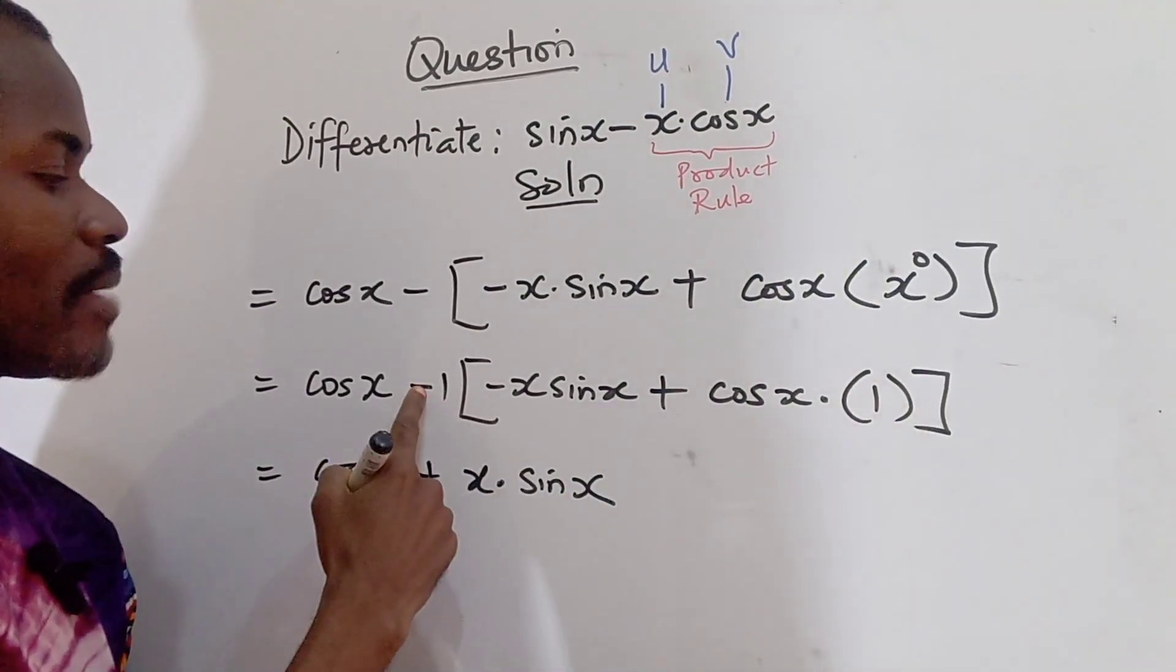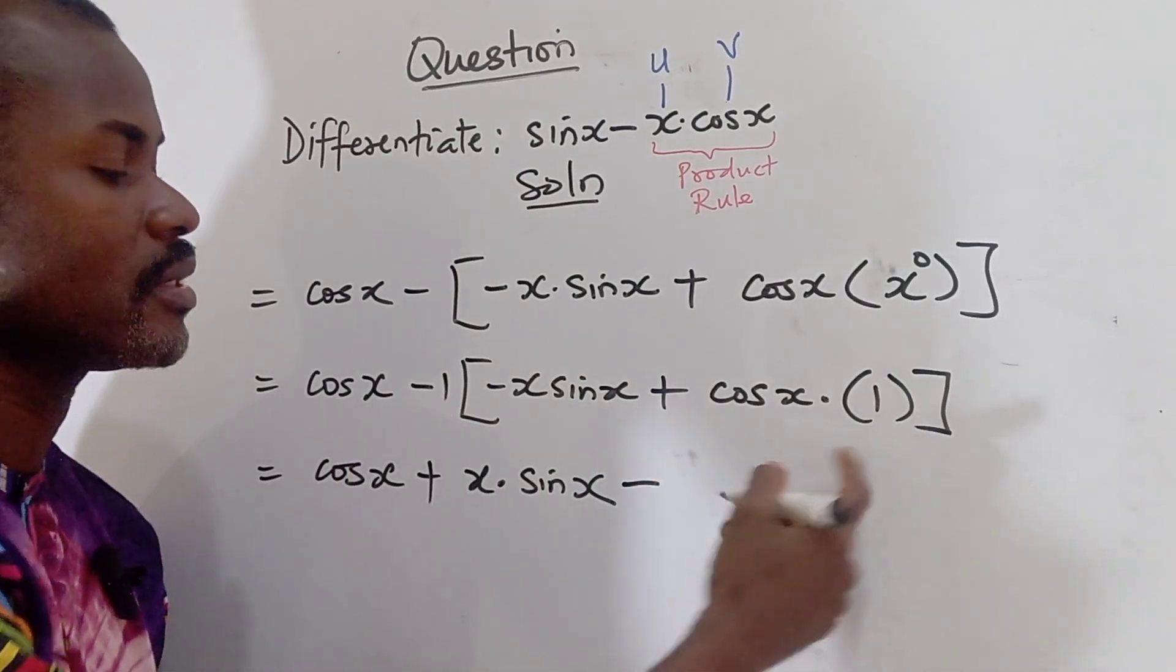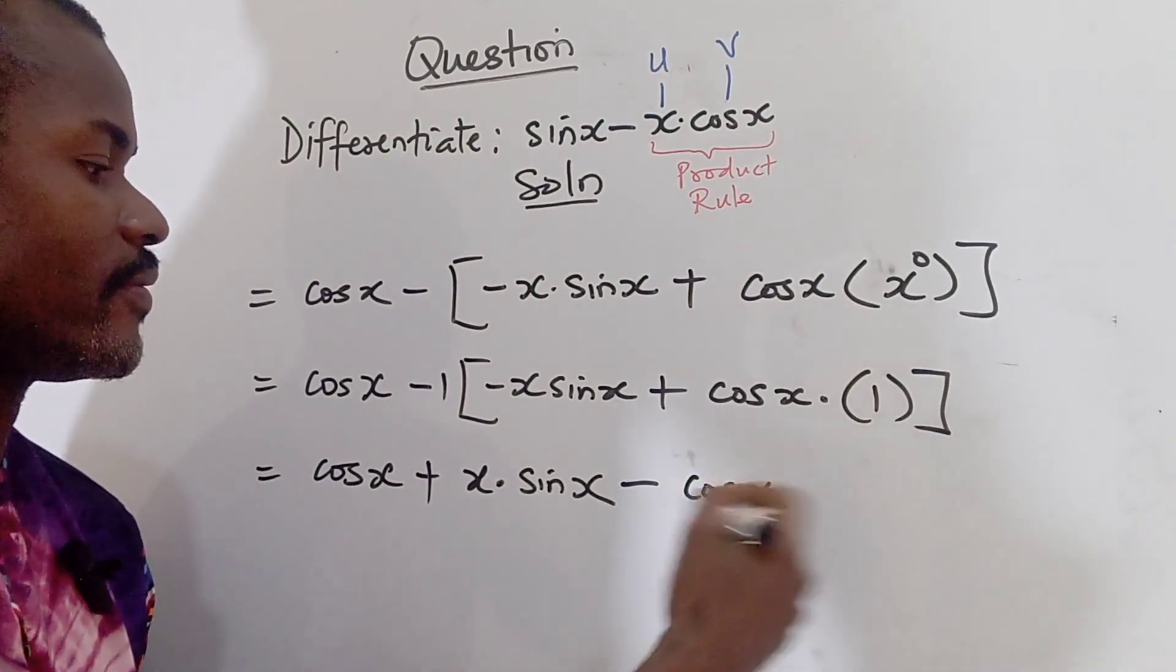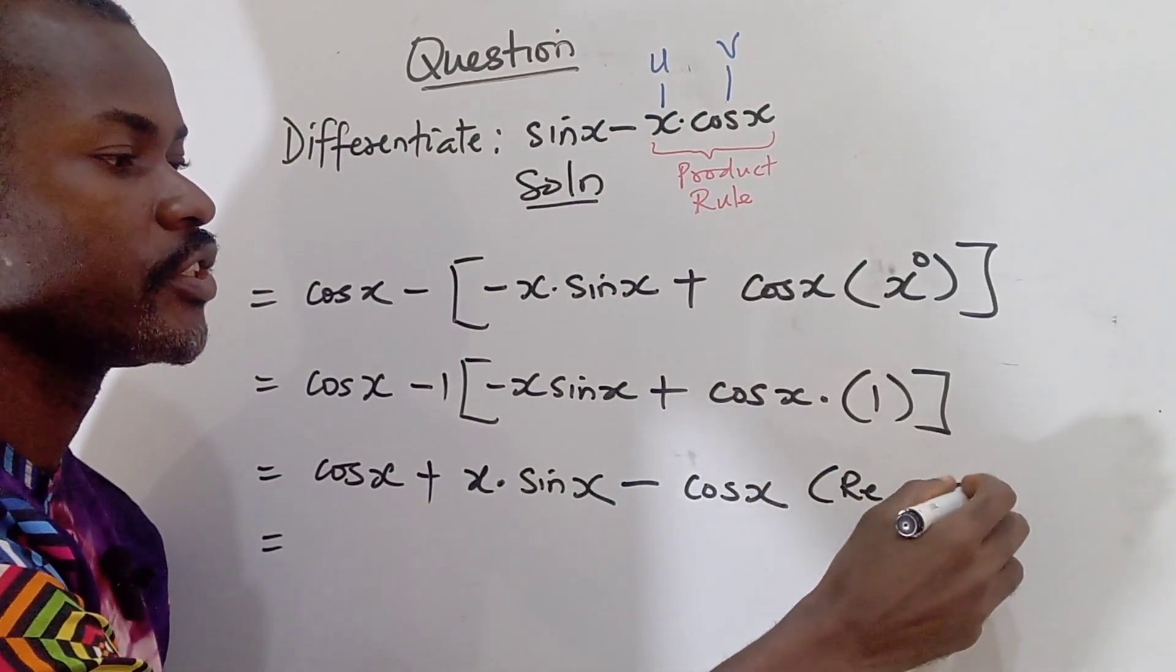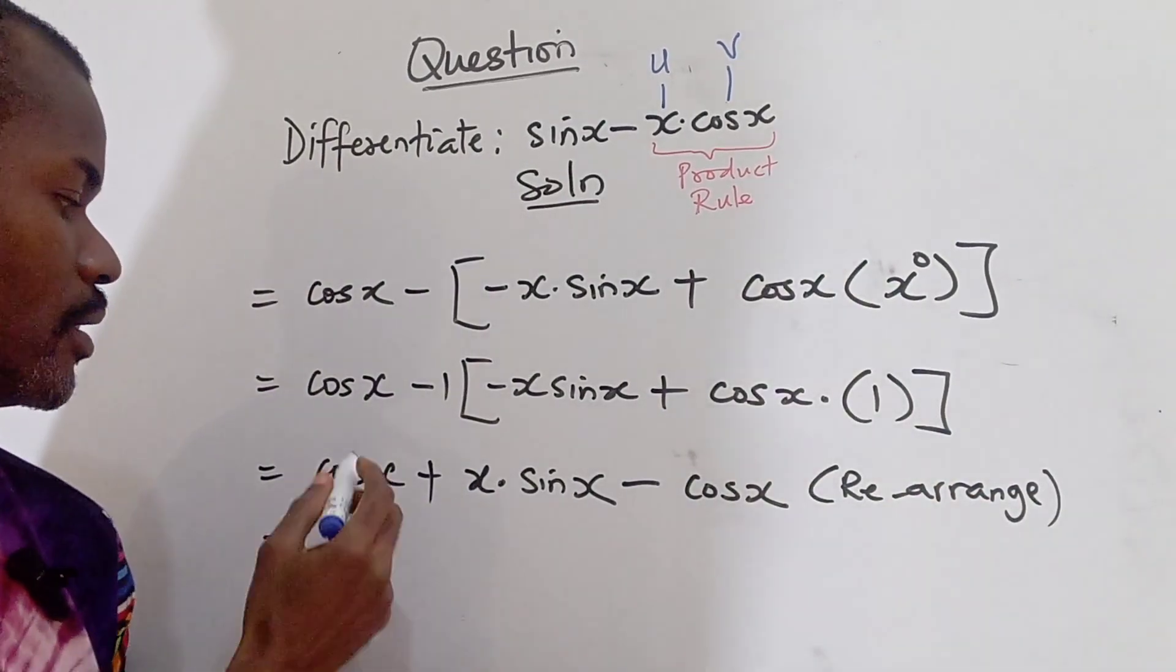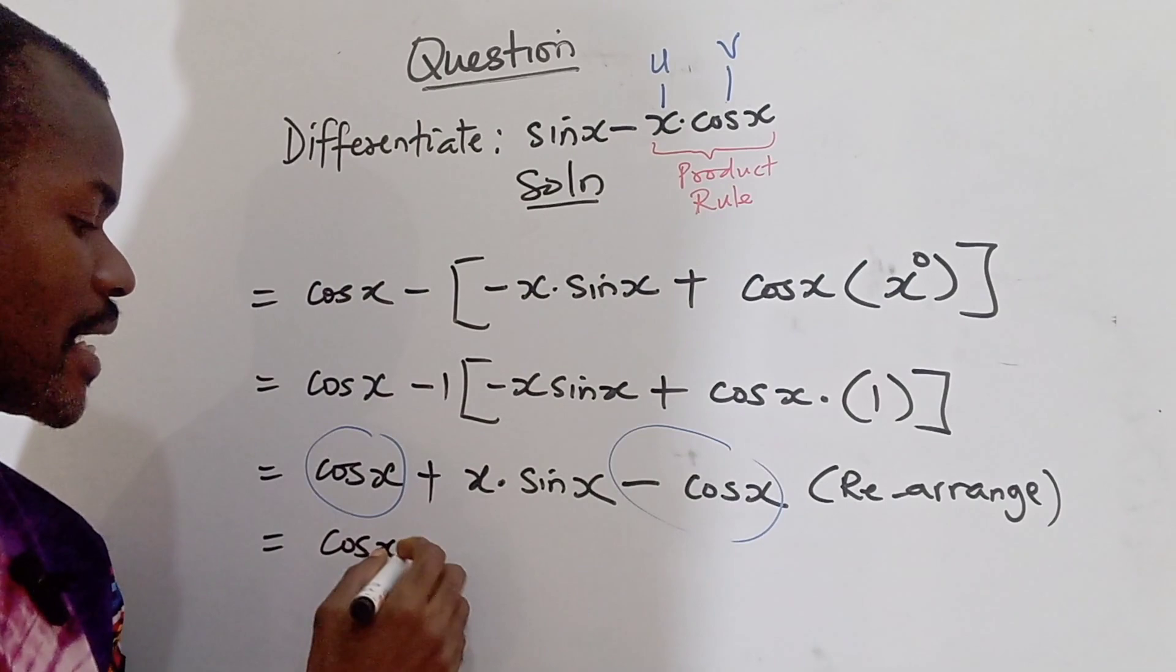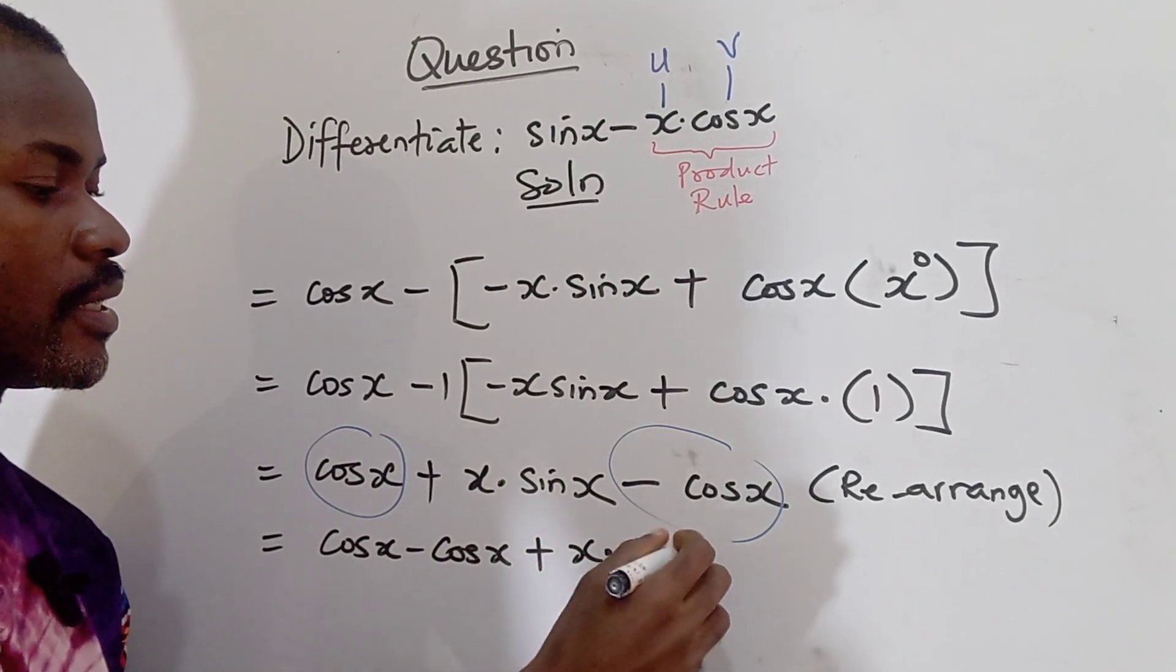Now minus 1 will multiply all this. So minus times plus here is going to give me minus. 1 times all this is still going to give us cos x. Remember cos x times 1 is still cos x. All right, so we have this expression. Now we can rearrange. Because I can observe something common. So this and this. They are alike.